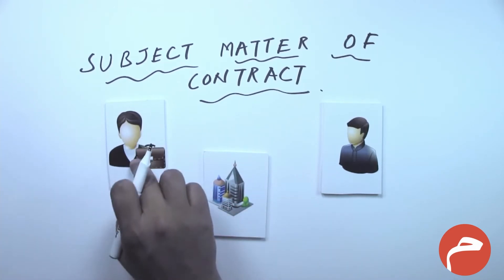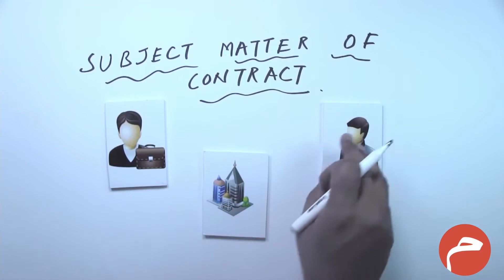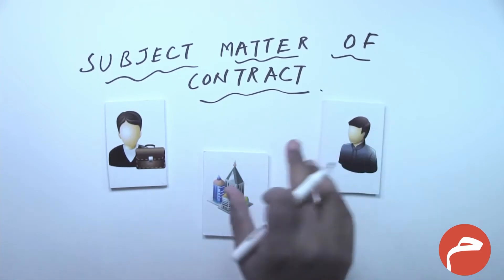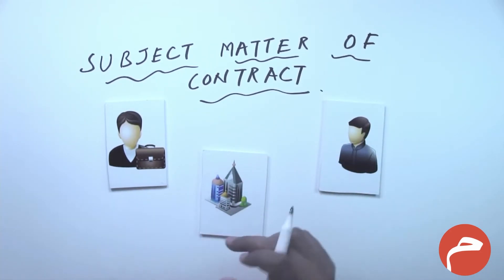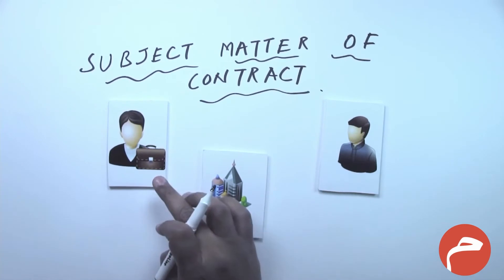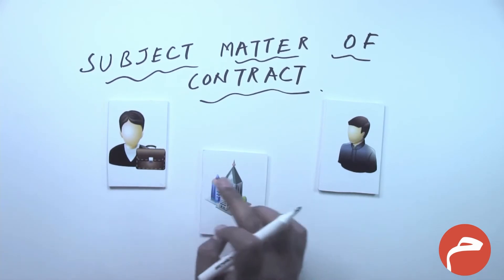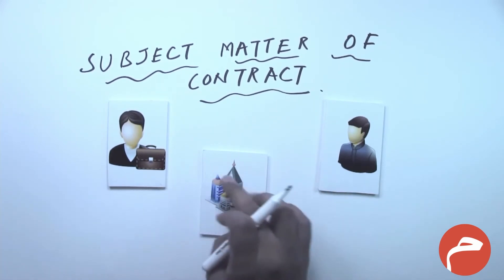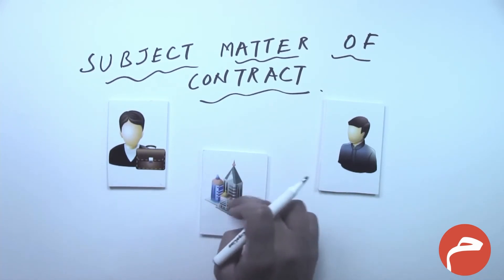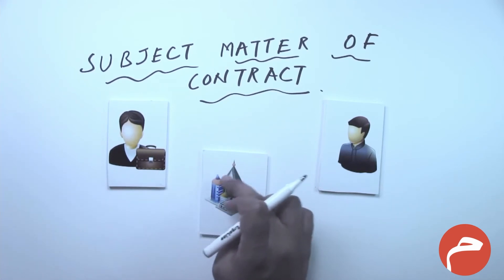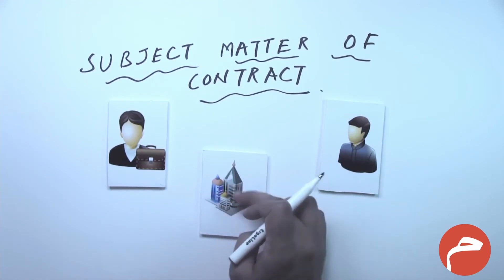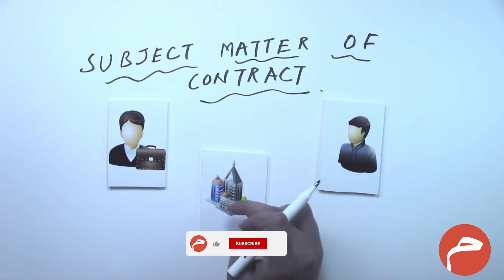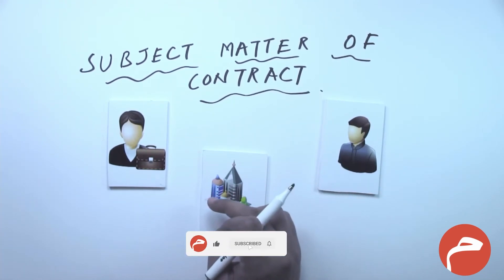So the subject matter could be three things: tangible assets, usufruct, or work. These buildings are sharia compliant tangible assets. If the seller wants to sell its real estate to the purchaser, these compliant tangible assets can be sold.